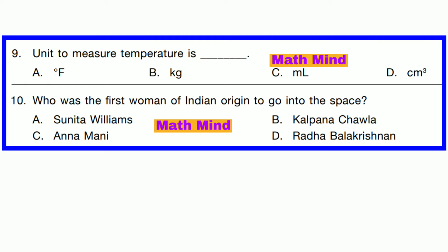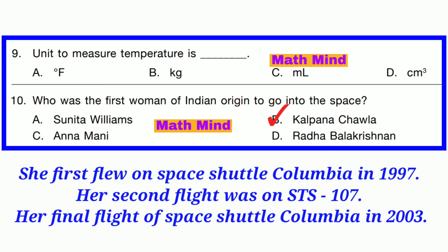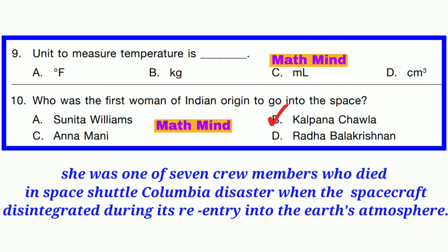Question number 10. Who was the first woman of Indian origin to go into space? Option B is correct: Kalpana Chawla. She was an American astronaut and engineer who was the first woman of Indian origin to go into space. She first flew on Space Shuttle Columbia in 1997. Her second flight was on STS-107. Her final flight was on Space Shuttle Columbia in 2003. She was one of seven crew members who died in the Space Shuttle Columbia disaster, when the spacecraft disintegrated during its re-entry into Earth's atmosphere.